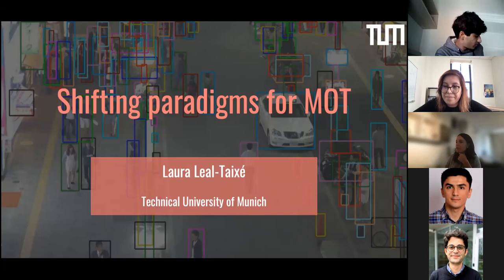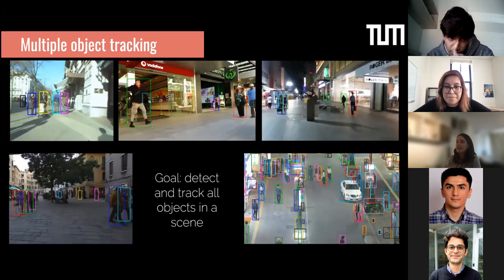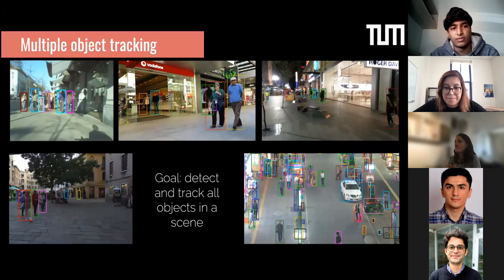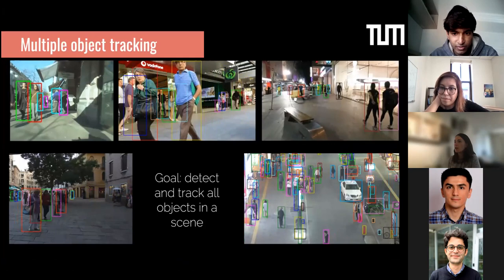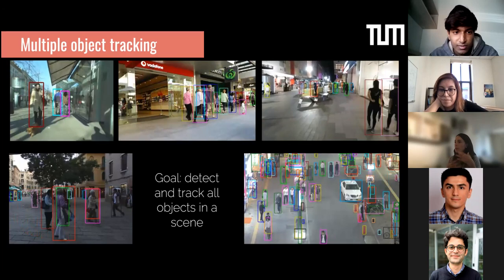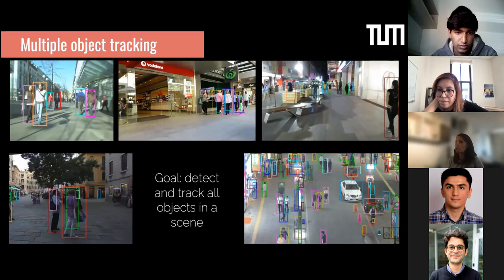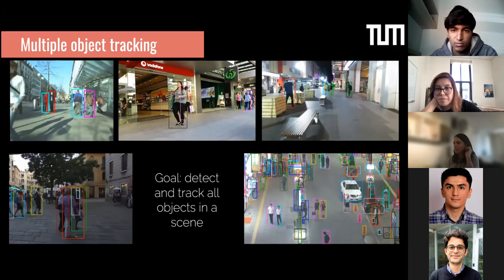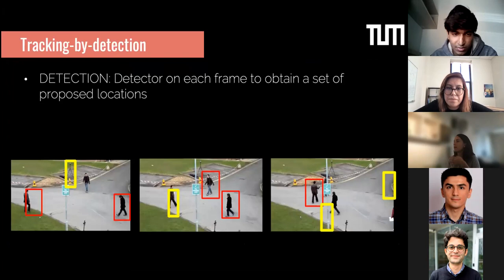Let's start by talking about the task at hand. I'm sure you're all familiar with multiple object tracking — we have sequences with moving cameras or static cameras, and the goal is to detect and track all objects in a scene. Objects can be of the same category, for example all pedestrians or all cars, or any object you're interested in detecting and tracking.